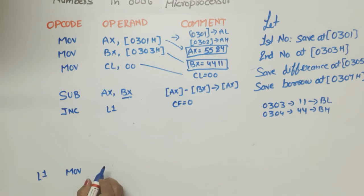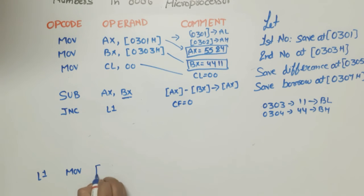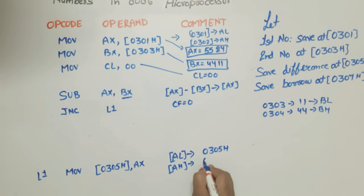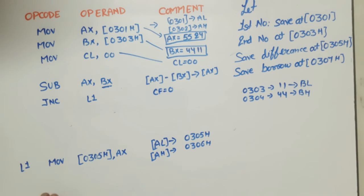So we will write move, what is the destination? The destination is 0305h. From where will data move? AX. Means that if this line executes, after execution of this line AL content will be moved in 0305h and AH content will be moved in 0306h.